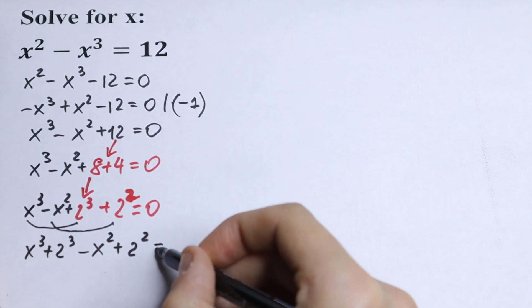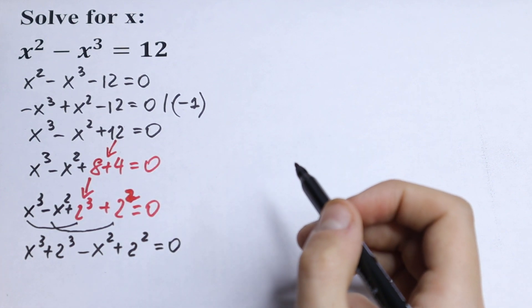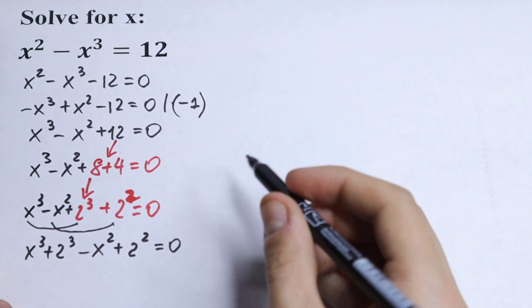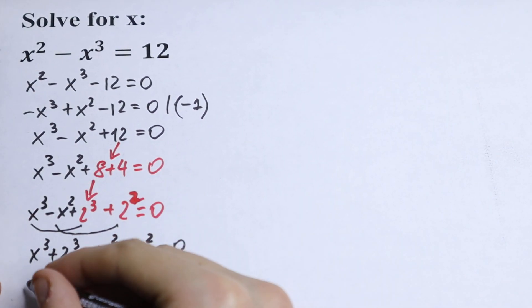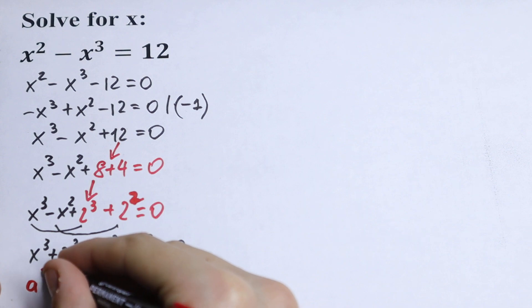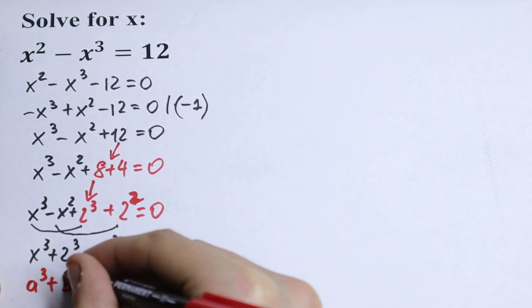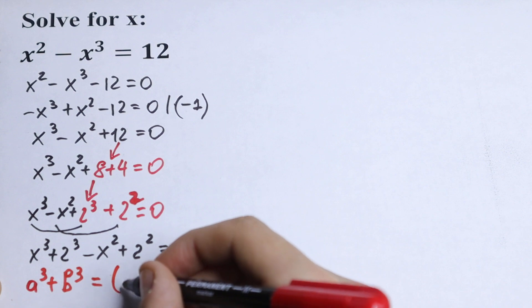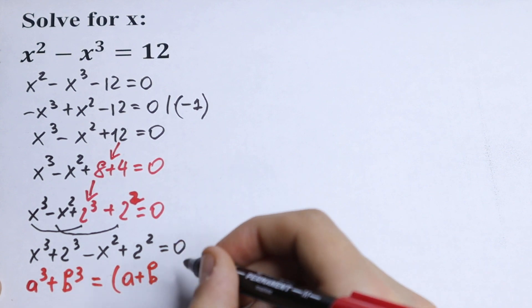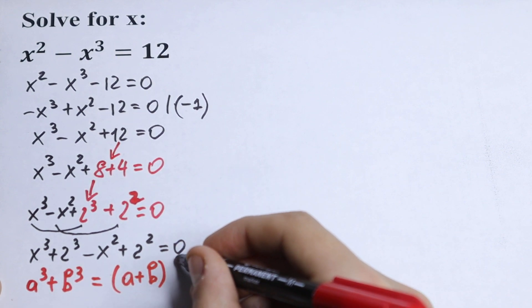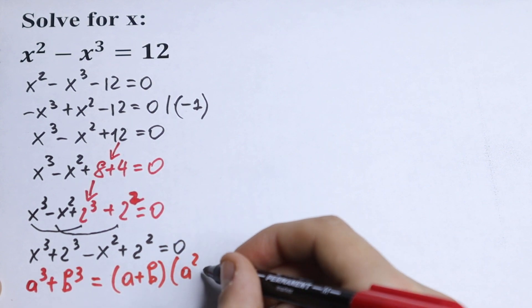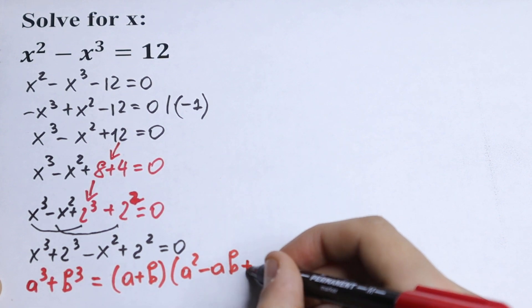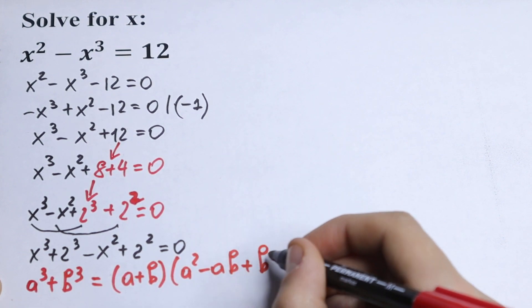Equal to 0. x cubed plus 2 cubed — the sum of cubes. Let's write the formula. We will have a cubed plus b cubed equal to a plus b, and in the second parentheses we will have a squared minus ab plus b squared.